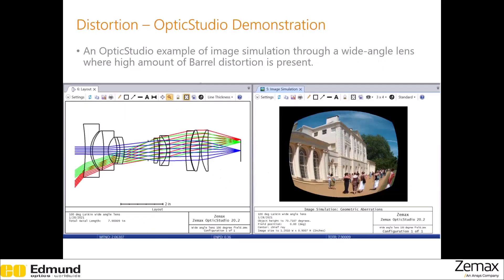This is a nice OpticStudio demonstration of barrel distortion. A wide-angle lens with a field of view of 100 degrees is used here. As expected, the large field of view introduced enormous amounts of distortion.